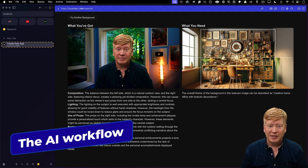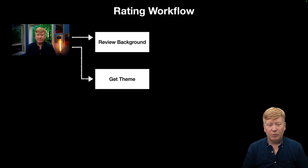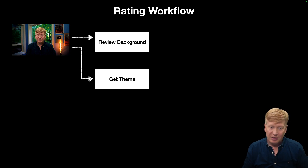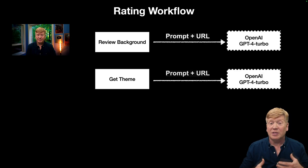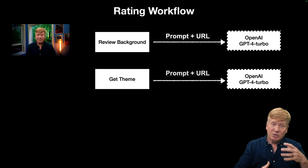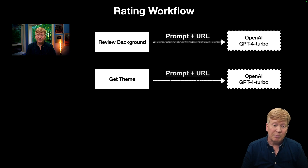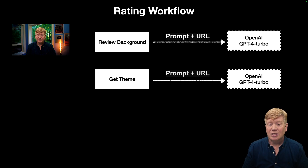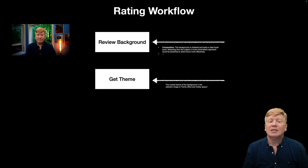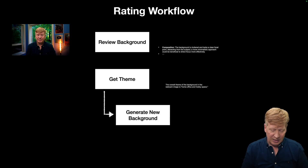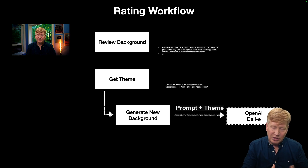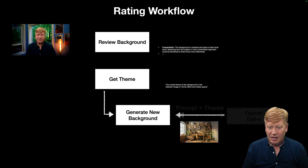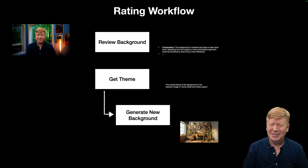So how is this actually working? Here's our background rating workflow. We start with the image and send it off to two different AI jobs running in parallel: one is going to review the background, the other is going to get the theme — both hitting OpenAI with different prompts but the same image URL. The review background prompt gives a broad prompt about good and bad things, and we want to stream back that response. The get theme response asks for a very short theme, and then uses that to generate a new background using DALL-E.